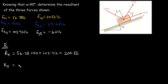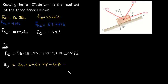For the y-component: Ry = 20.52 + 69.28 − 60 = 29.8 pounds. We can now use these to find the magnitude of the resultant force.